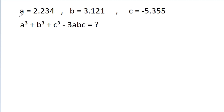We have given that a is equal to 2.234, b is equal to 3.121, and c is equal to minus 5.355. Then we have to find the value of a cube plus b cube plus c cube minus 3abc.